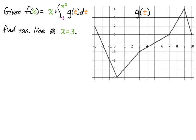To write the equation of a tangent line, we need a point and we need the slope. I'm going to start off by finding the point. It's going to be at x equals three, so I need to find f(3).